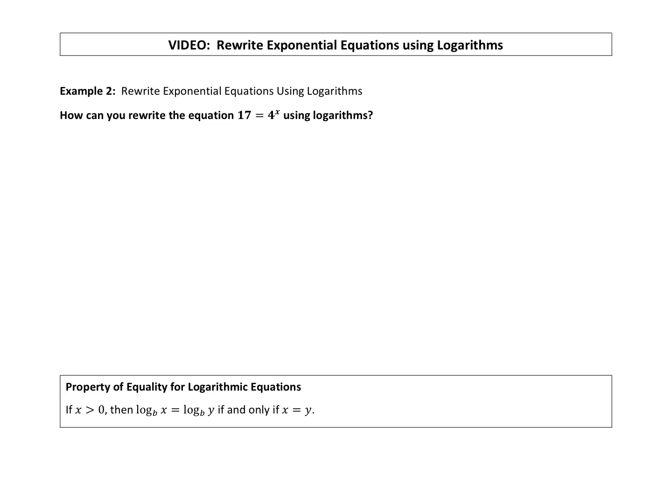All right, so we just saw a video on how you can solve exponential equations that have a common base. What's different about this example is we have the equation 17 = 4^x and we can't rewrite both sides of this equation with a common base. So that's what makes this example different.